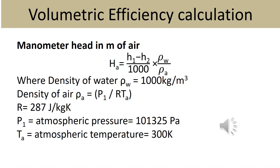The first step to calculate the volumetric efficiency is to determine the actual volume of air compressed. For that, the water manometer readings H1 and H2 can be used. The difference between the readings will provide the head in terms of water. This has to be converted into terms of air, since we are conducting our experiment on air. By means of the continuity equation, the head in terms of air, HA, can be determined using the expression: HA = (H1 − H2) × (density of water / density of air).